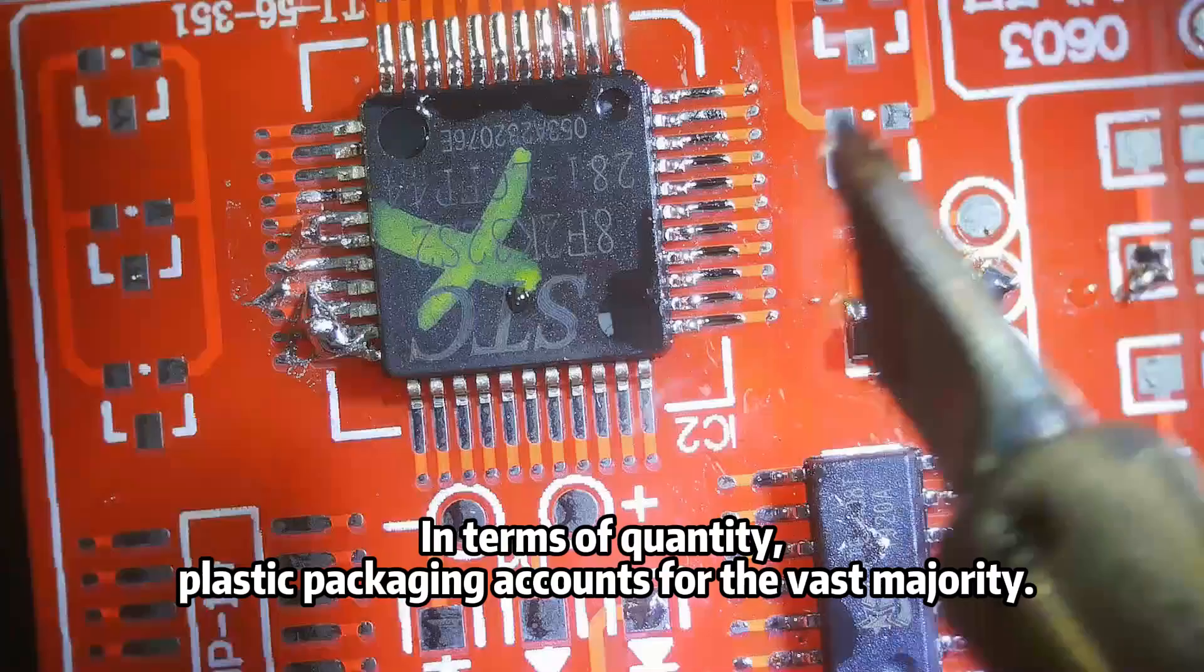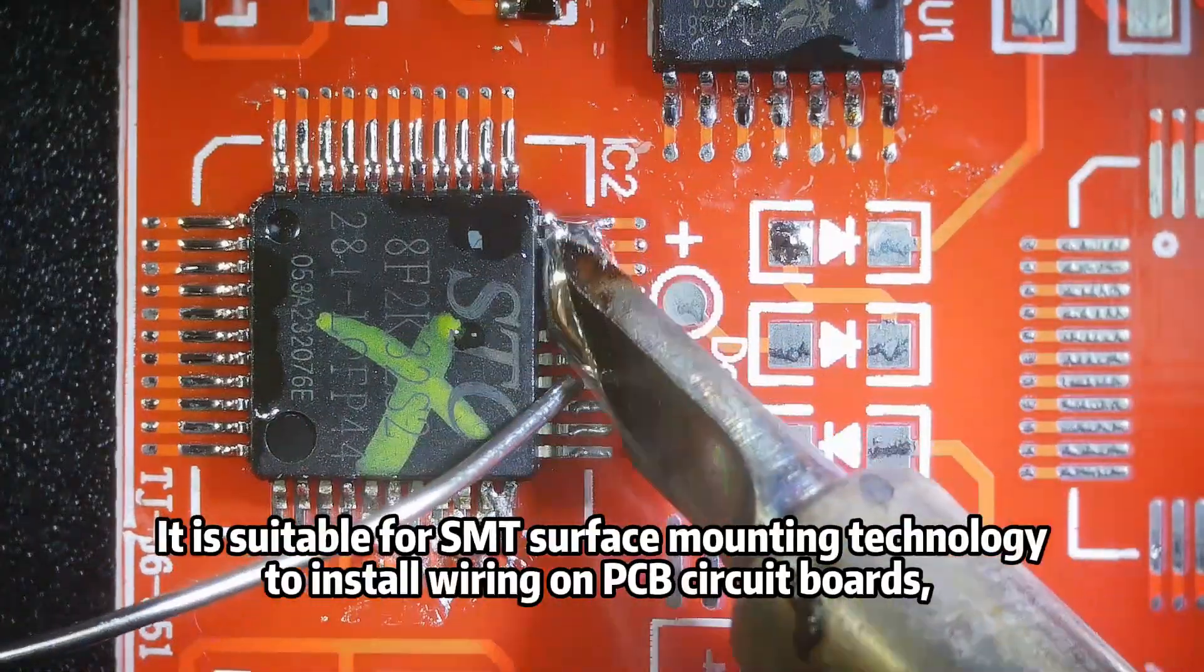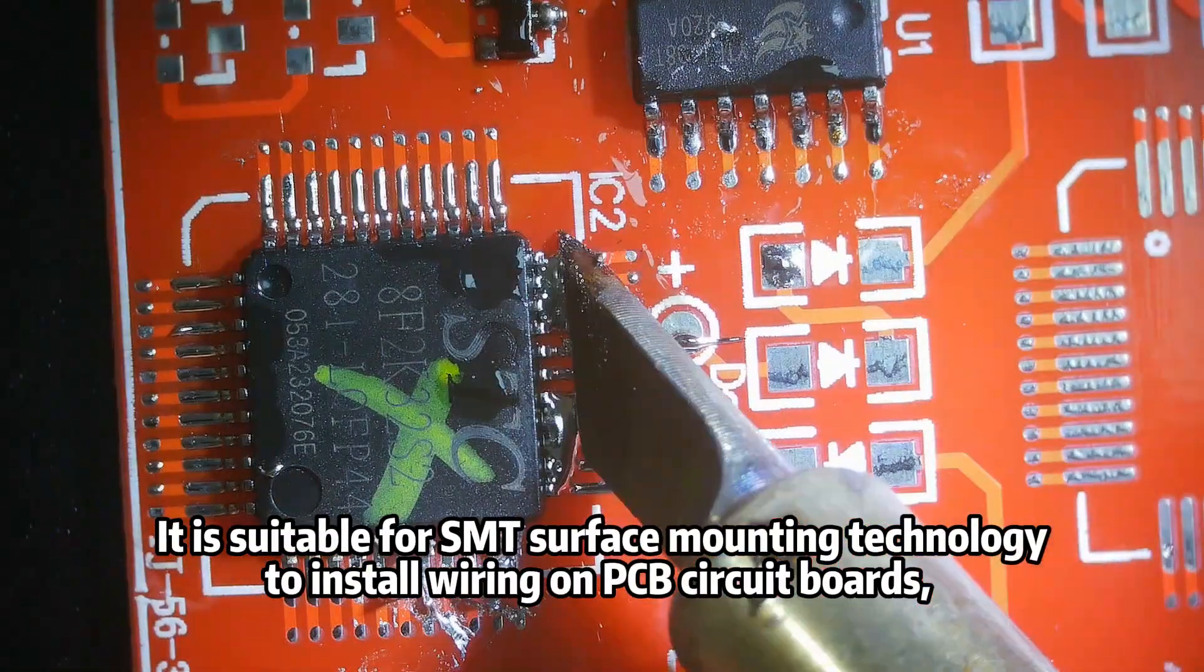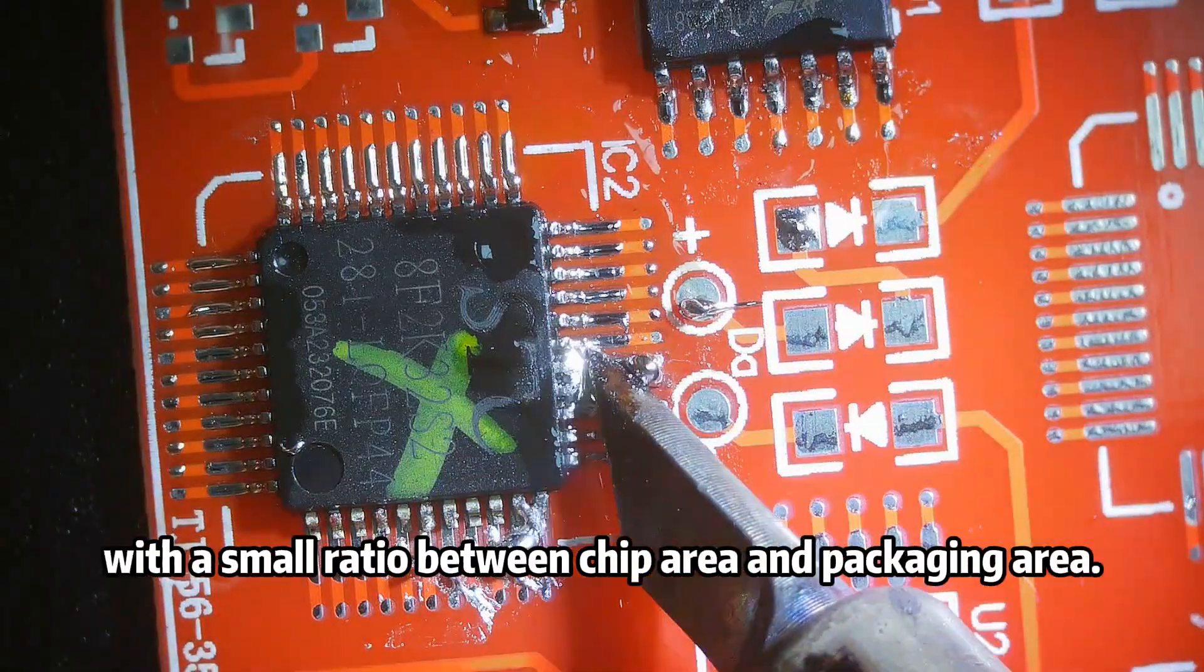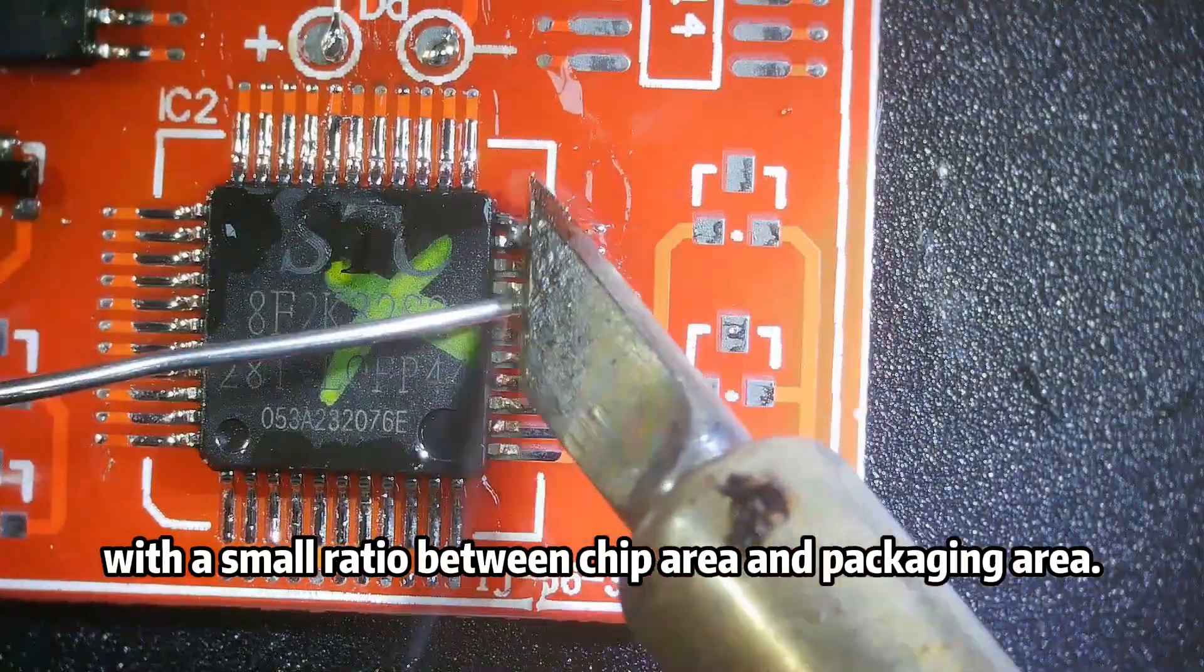Plastic packaging accounts for the vast majority. It is suitable for SMT surface mounting technology to install wiring on PCB circuit boards, with a small ratio between chip area and packaging area.